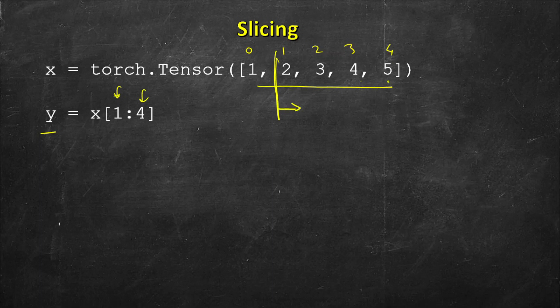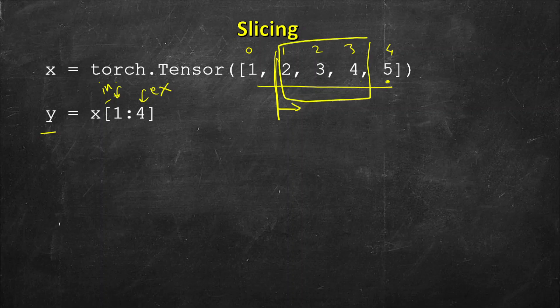And the last index is 4, that is this one, but this one is excluded. So this is excluded, this is included, just like slicing on Python list. It's from index 1 till 3, this 4 is not included, so it should mean this smaller tensor with a value of 2, 3, and 4.